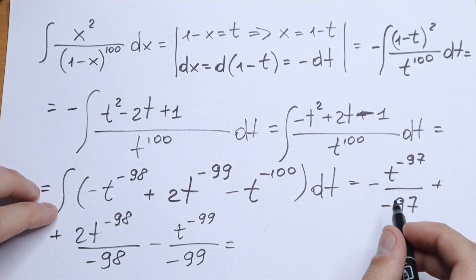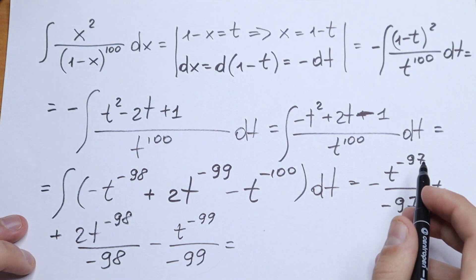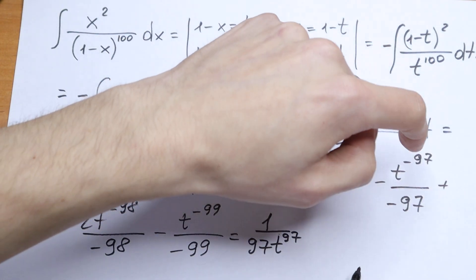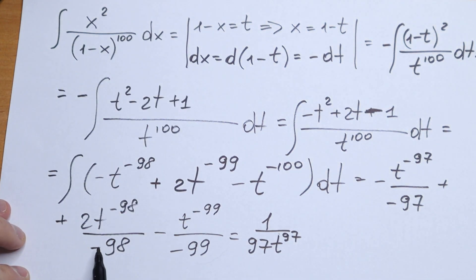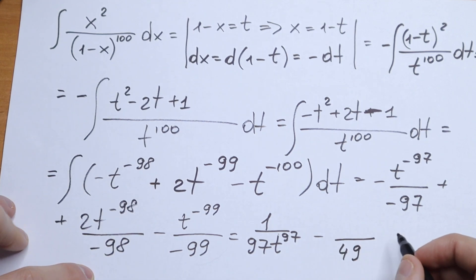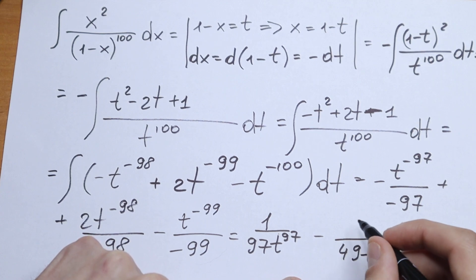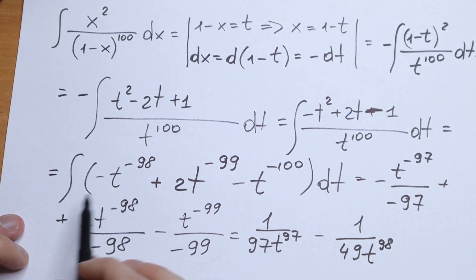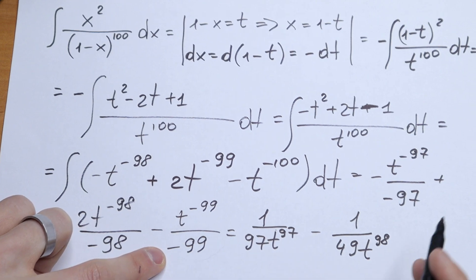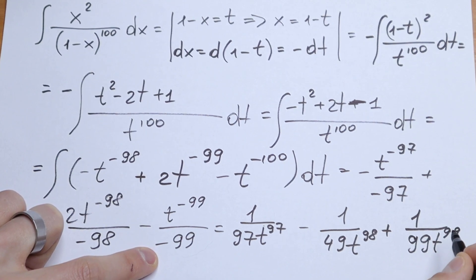Now let's simplify. For the first term, the two minus signs cancel and we bring 97 to the denominator: we get 1 over 97·t to the power 97. For the second term, we cancel the 2 with 98 to get 49, and bringing the negative exponent to the denominator gives minus 1 over 49·t to the power 98. For the third term, the two minus signs give a plus, so we get plus 1 over 99·t to the power 99.